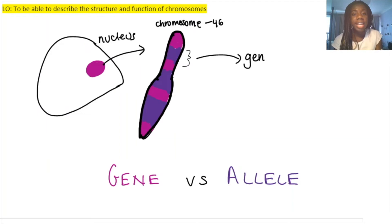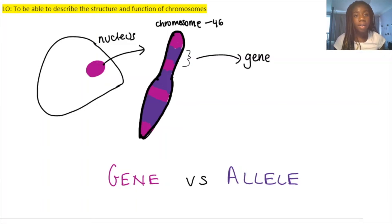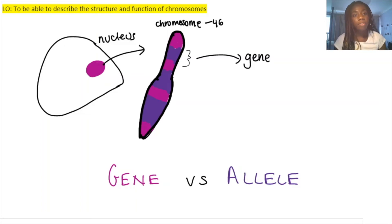A gene is a section of DNA that codes for a specific protein, and therefore a certain characteristic — for example a gene for hair colour or eye colour. An allele is a different form of a gene. So while you might have a gene which codes for hair colour, you could have an allele for blonde hair or for brown hair. Alleles are basically the different varieties of each gene.